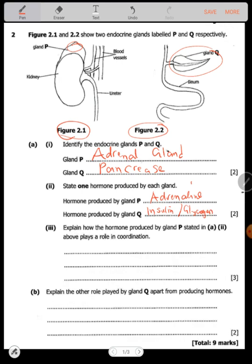Explain how the hormone produced by P, which is the adrenal gland, plays a role in coordination. The adrenal gland increases the heart rate and also increases...